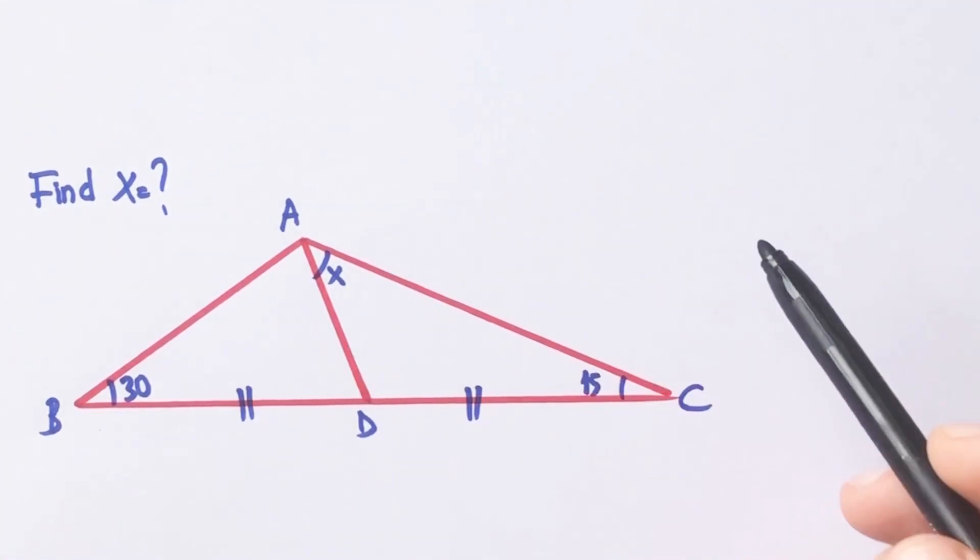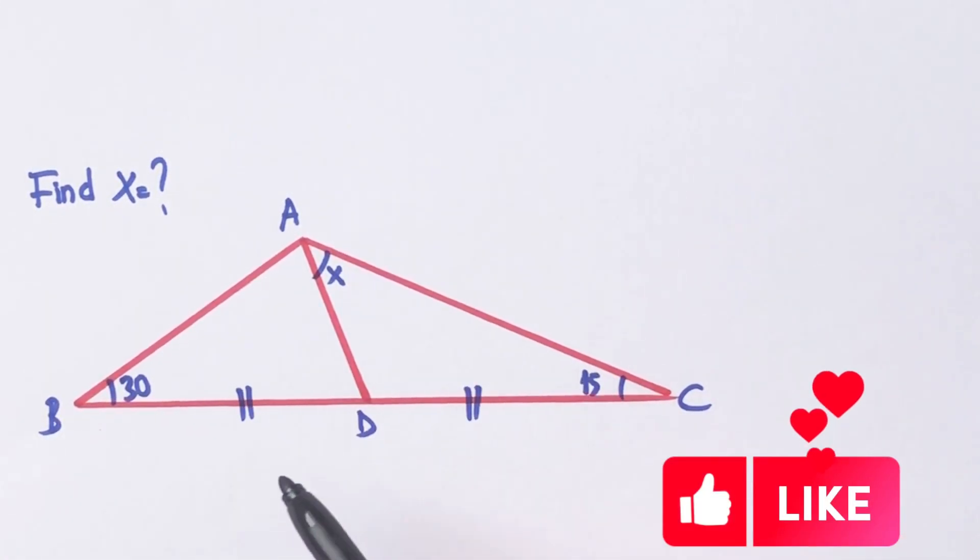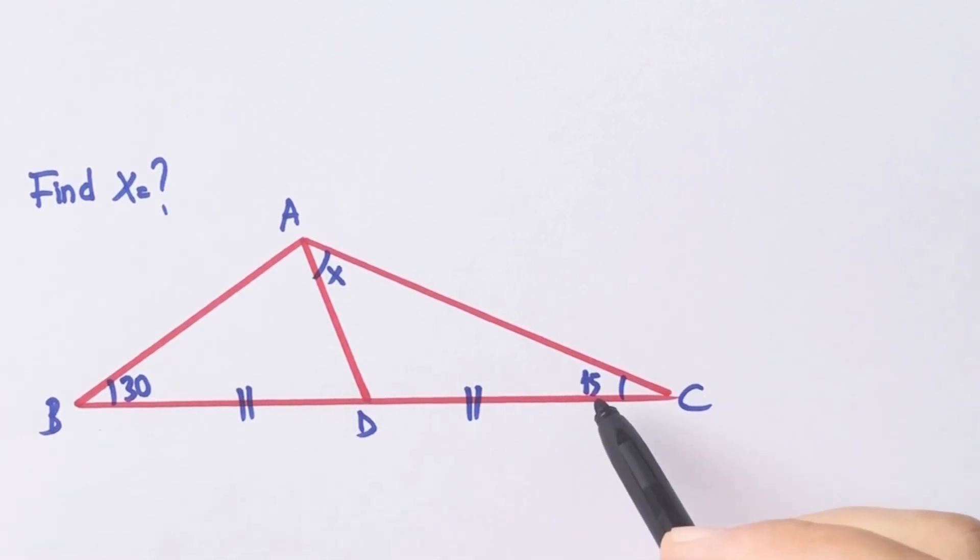Hello everyone, in this video we have one triangle and here is 30, here is 15. These two parts are equal and x is asked.